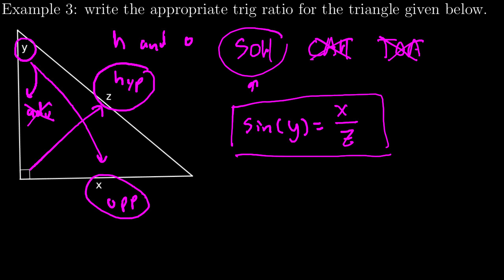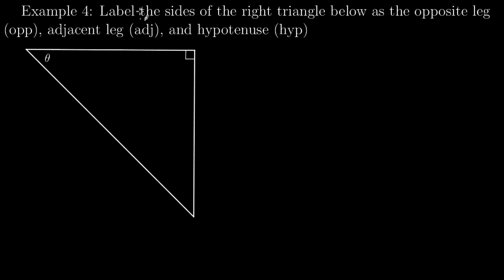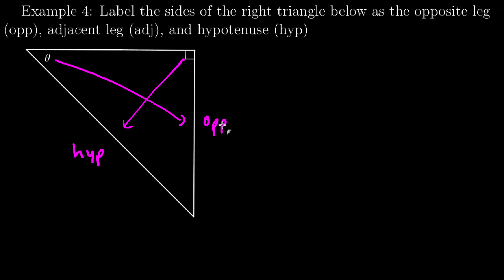Now we'll go through another round of similar problems. Label the sides: always start at my right angle, go across — there's the hypotenuse. Go to the acute angle, go across — there's my opposite leg. The only side left over is the adjacent leg. You can see it is next to the angle and also between the given angle and the right angle — that will always be adjacent.